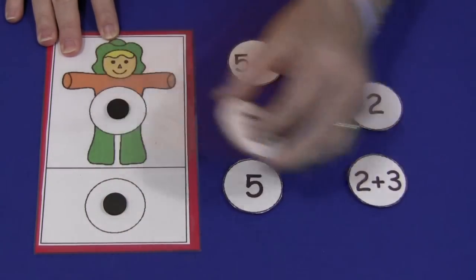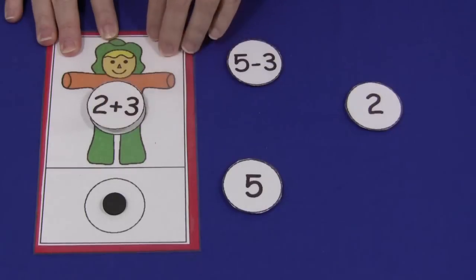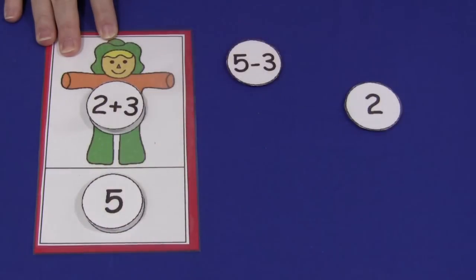And again, I've included the blank circle. So if you wanted to do an addition, you put the addition one on top, 2 plus 3, and then they would need to find what the sum of that would be, and that's 5.